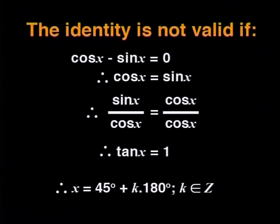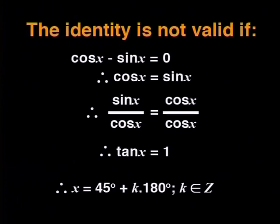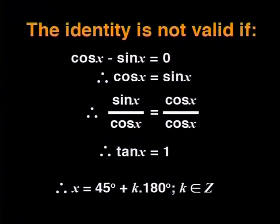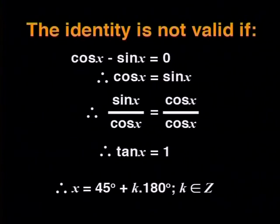Now what about when cosine x minus sine x equals zero? Adding sine x to both sides and dividing both sides by cosine x, we get tan x equals 1. This is true when x equals 45 degrees plus k times 180 degrees, giving 45 degrees, minus 135 degrees, 225 degrees, and so on. Do you see that these exclusions are similar to the first ones? You will still need to work out the exclusions based on each denominator separately.